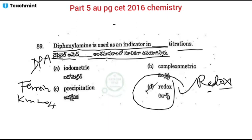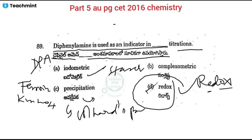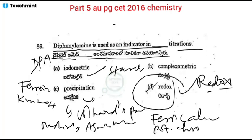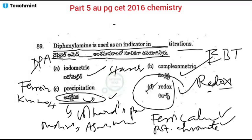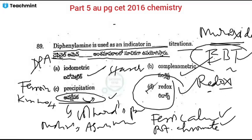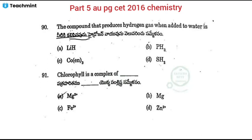In argentometric titrations — AgNO₃ versus NaCl — potassium chromate is used as a precipitation indicator in the Mohr's method. In complexometric titrations such as EDTA titrations, Eriochrome Black T (EBT) is used as an indicator. These are the key indicators for different types of titrations.